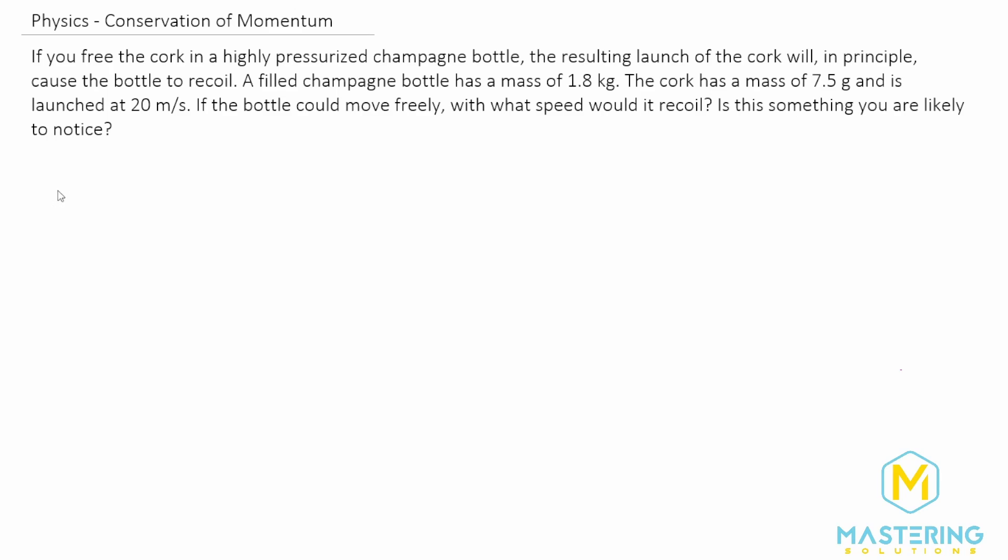So let's write our units down that we're given. They tell us that the mass of the bottle is equal to 1.8 kilograms. The mass of the cork is equal to 7.5 grams.